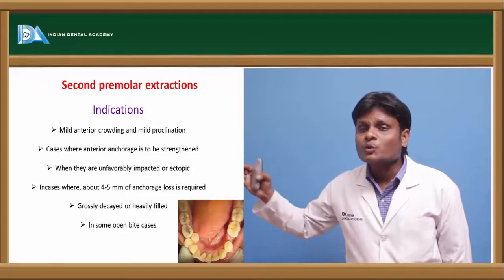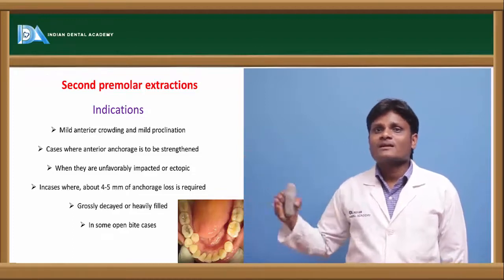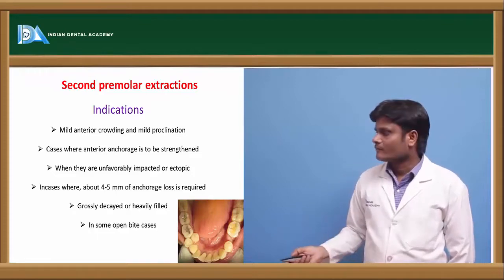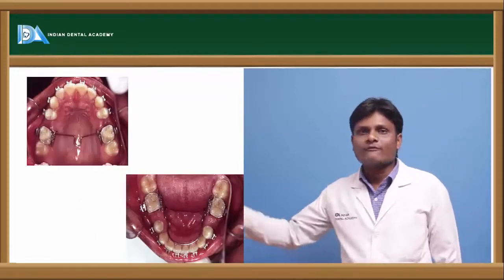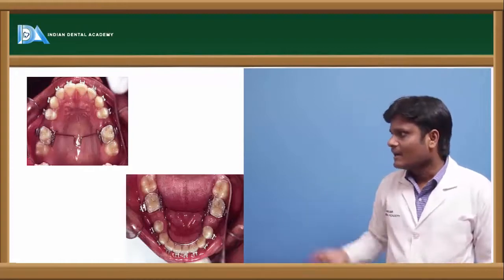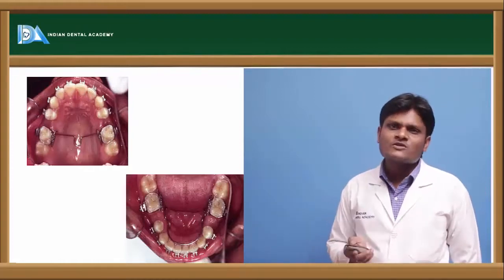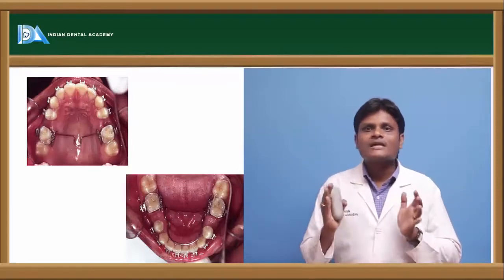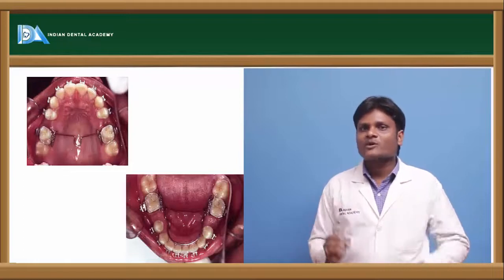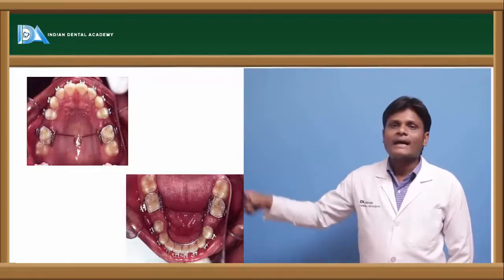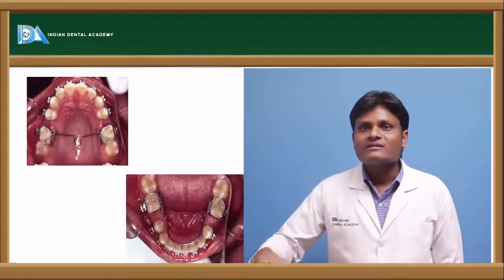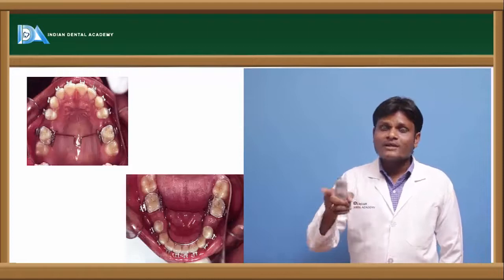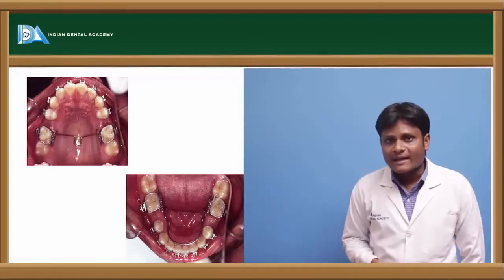This is a case where second premolar extraction was done. The extracted space will be closed to a greater extent by mesial movement of the posteriors, and to a lesser extent by decrowding and mild proclination reduction of the anteriors. Here the anterior group of teeth provides more strengthened anchorage because, apart from canine to canine, even first premolars are incorporated in the anchorage segment.